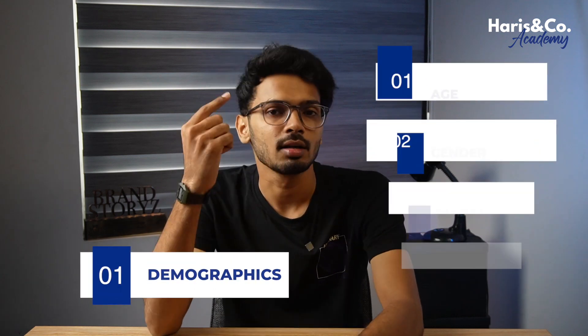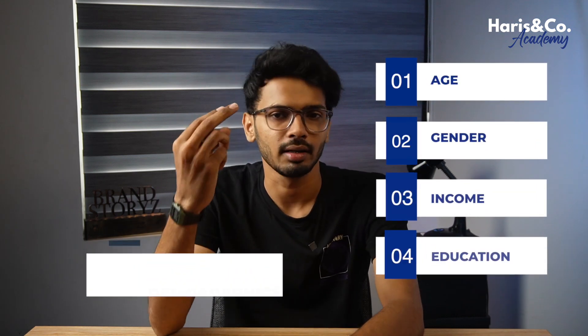So the main categories to understand your audience: number one is demographics — age, gender, income, and education. Number two is psychographics — values, interests, lifestyle, and the why behind their choices, meaning the reason why they choose a product or service.